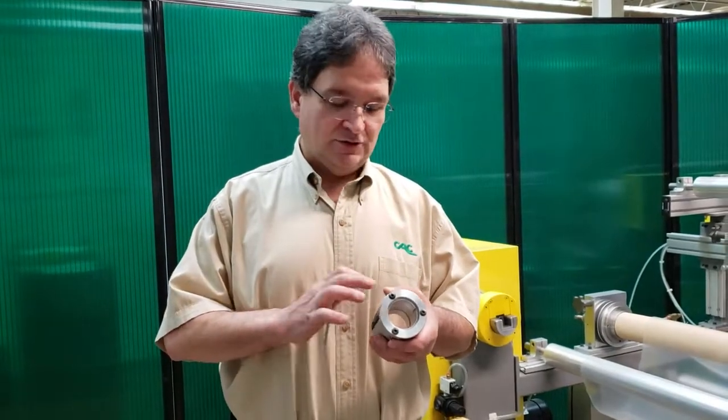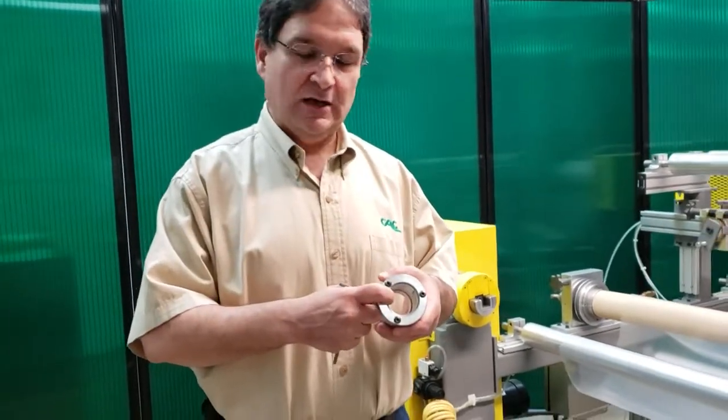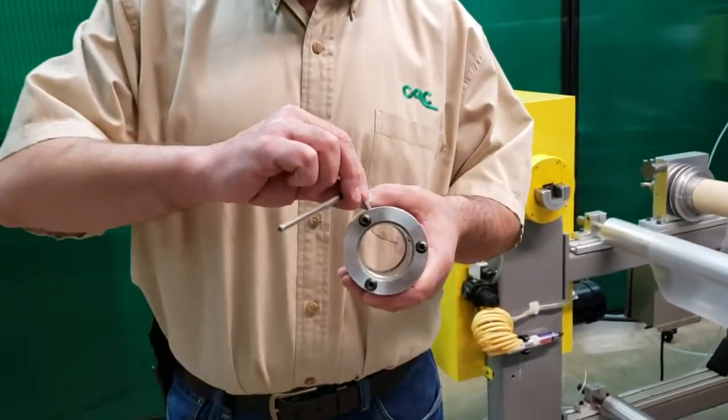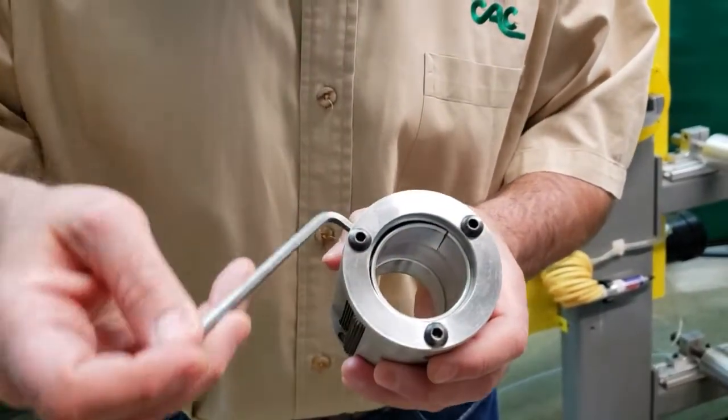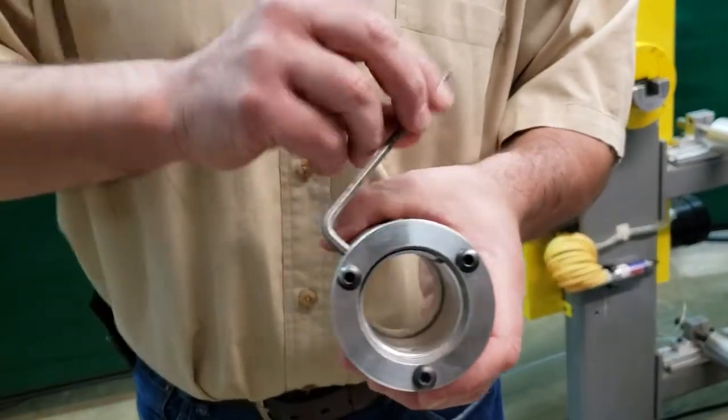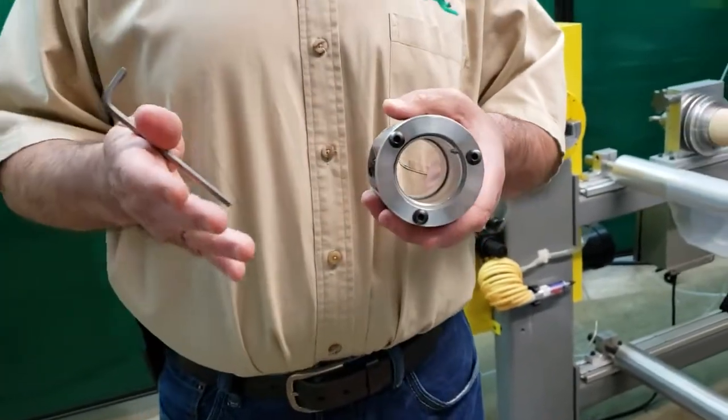All of CAC's mechanical chucks include a split bushing locking. So when I tighten this set screw, you'll see that that split bushing will close, and that's what locks to your through shaft. So the set screws never touch your through shaft.